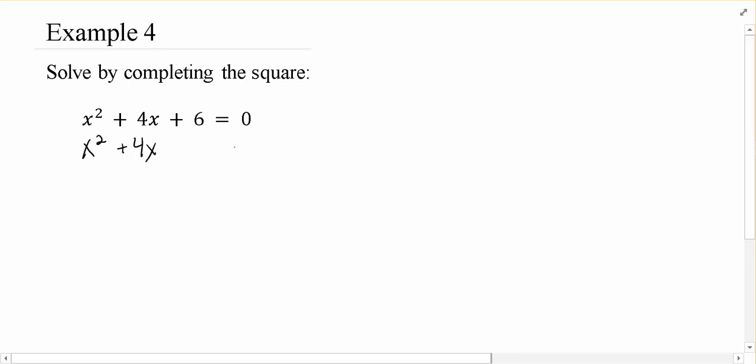First thing we're going to do is subtract the 6 to the other side, then we're going to add our magic number.